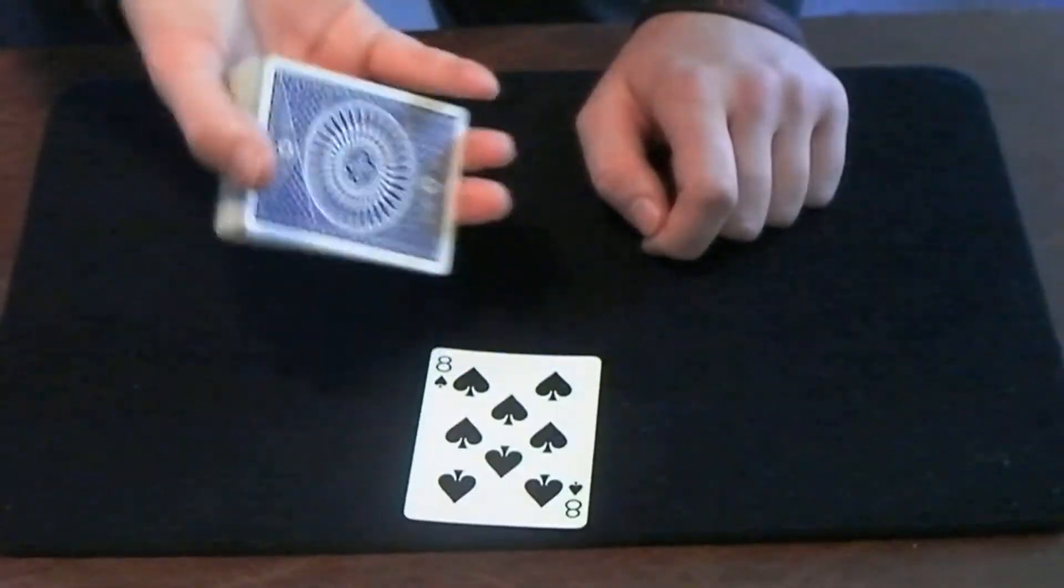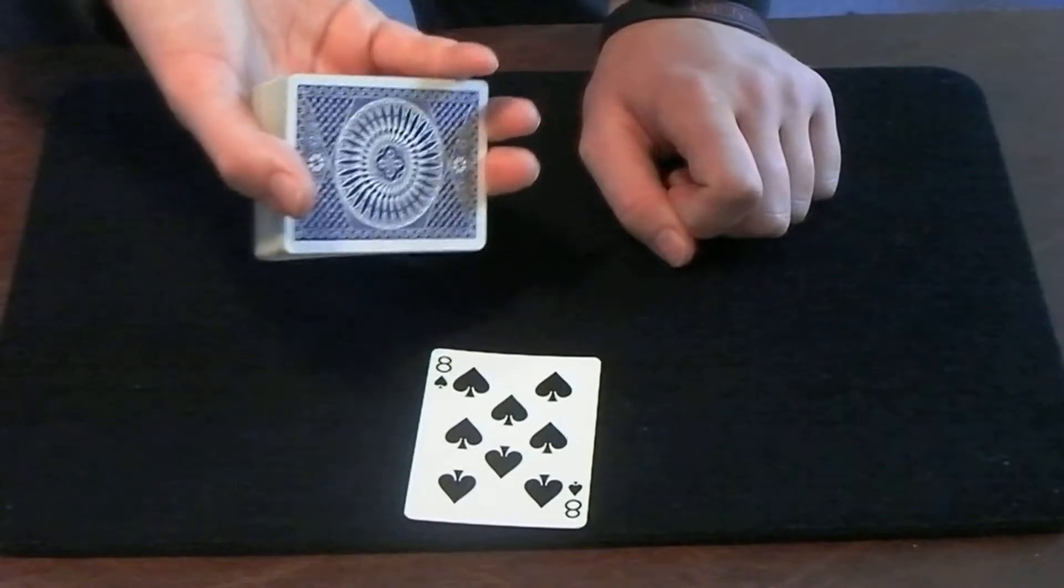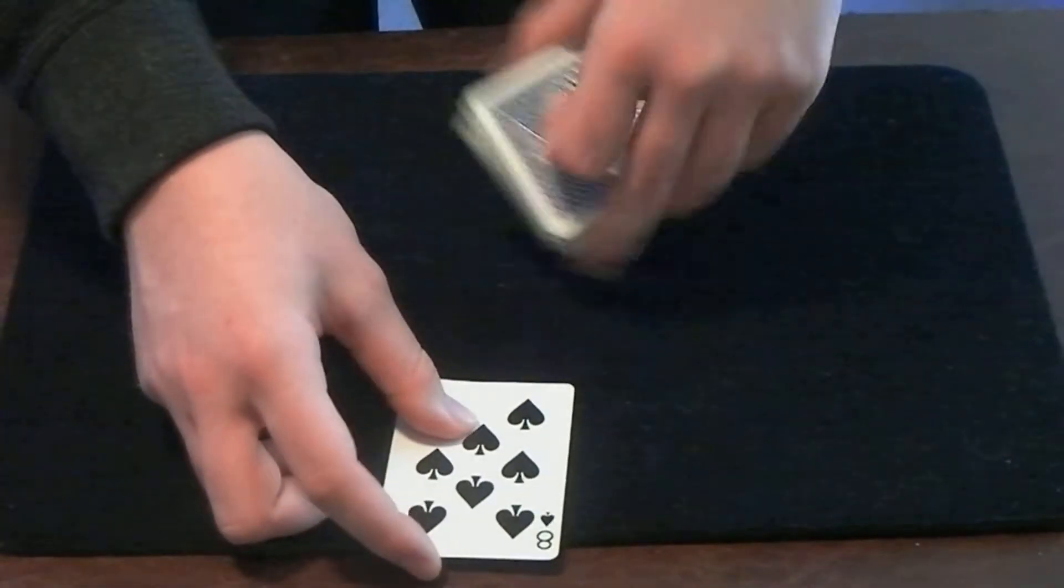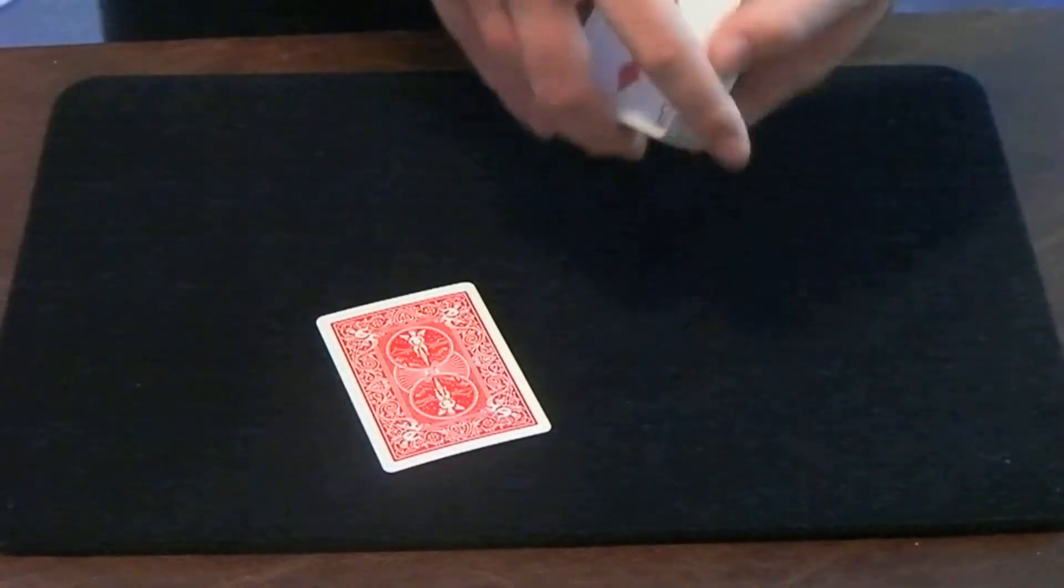The funny thing about the eight of spades is that it's different from every card in the deck. Yeah, I know it is on the front, but I mean on the back. You see, all the cards are blue, but this one is red—red in bicycle back, not tally-ho.